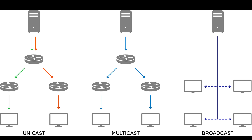Next we have multicasting. It is a mechanism by which groups of network devices can send and receive data between the members of the group at one time — one-to-many — instead of separately sending messages to each device in the group. Multicasting grouping is established by configuring each device with the same multicast IP address.